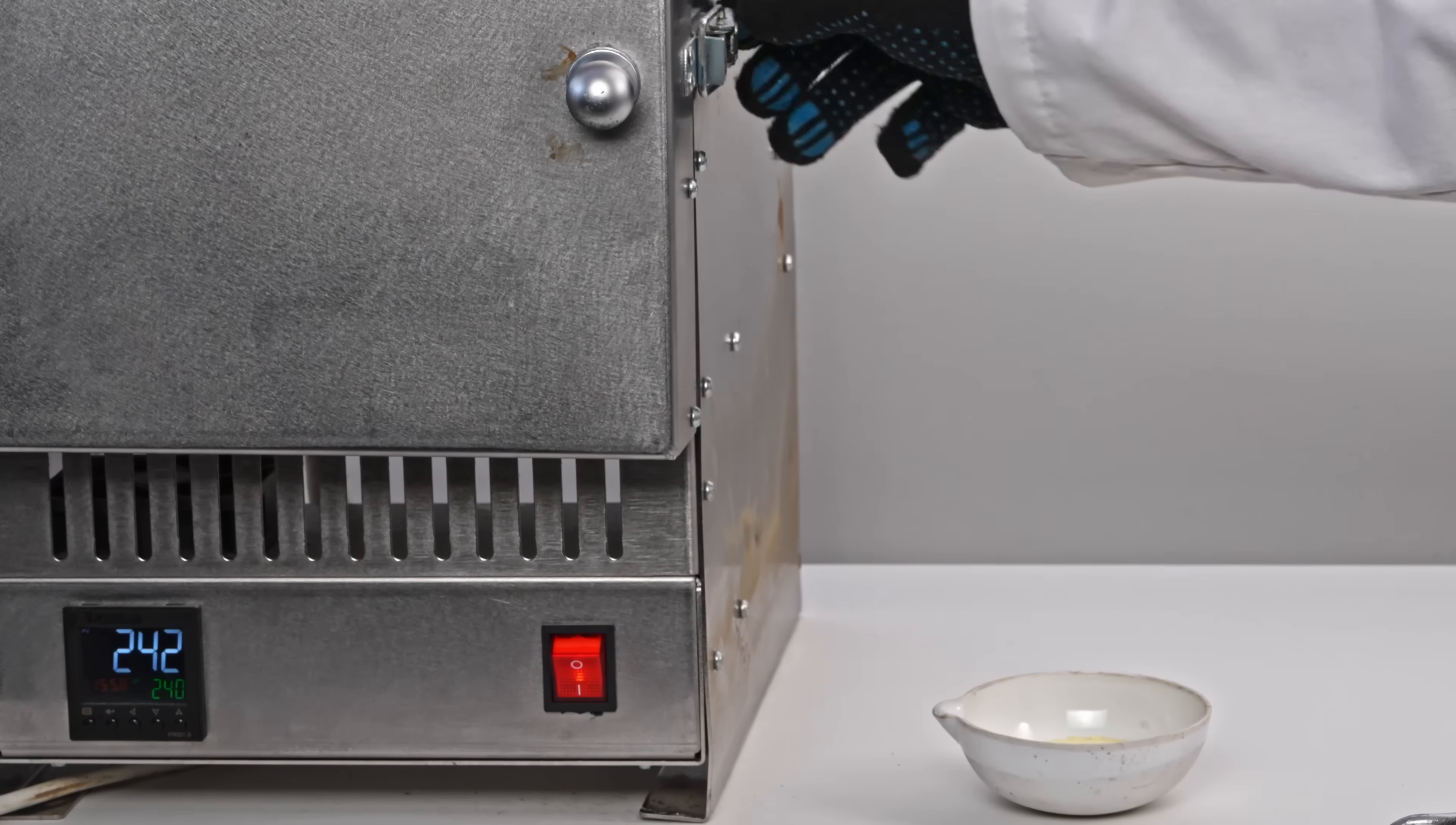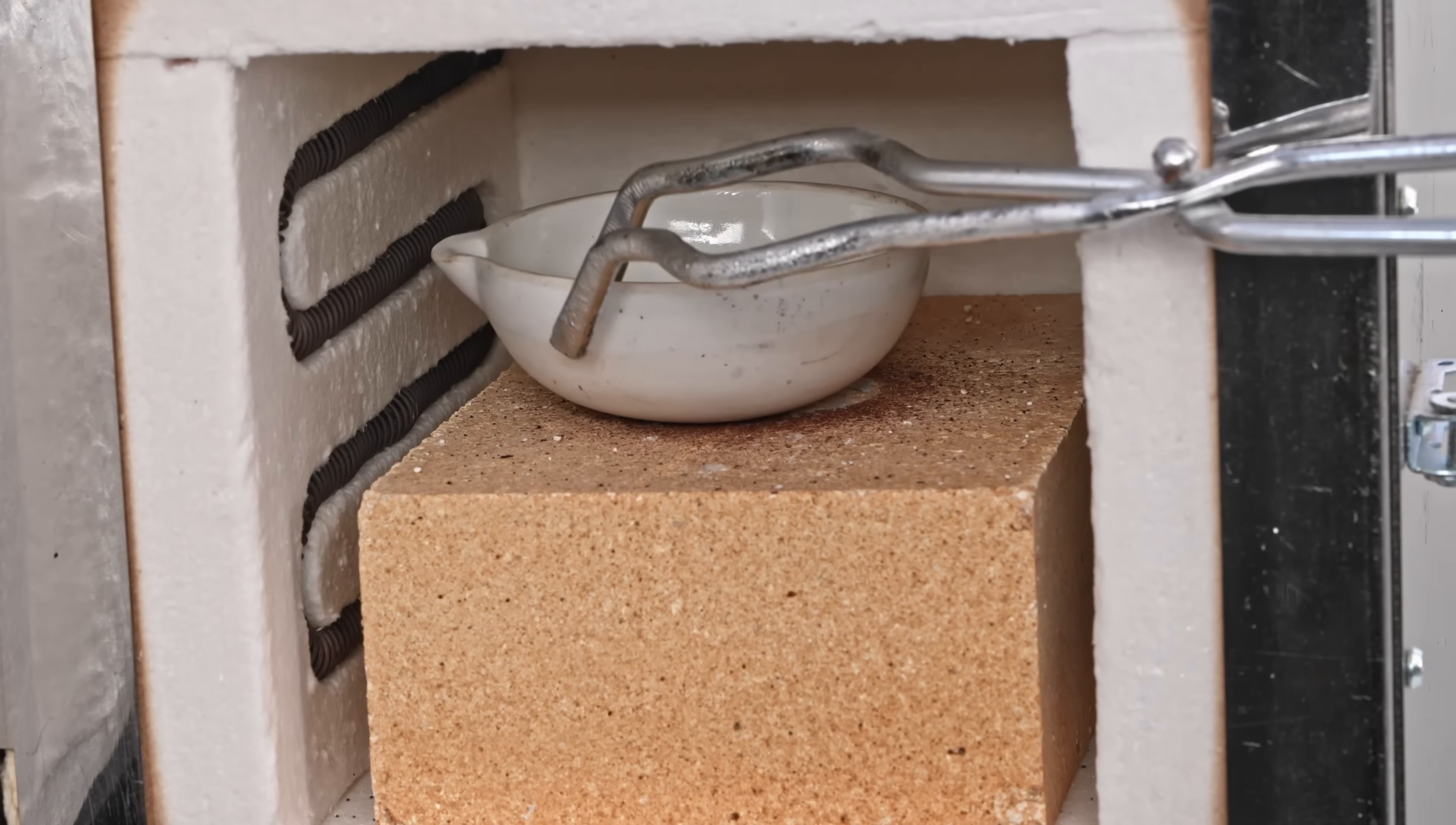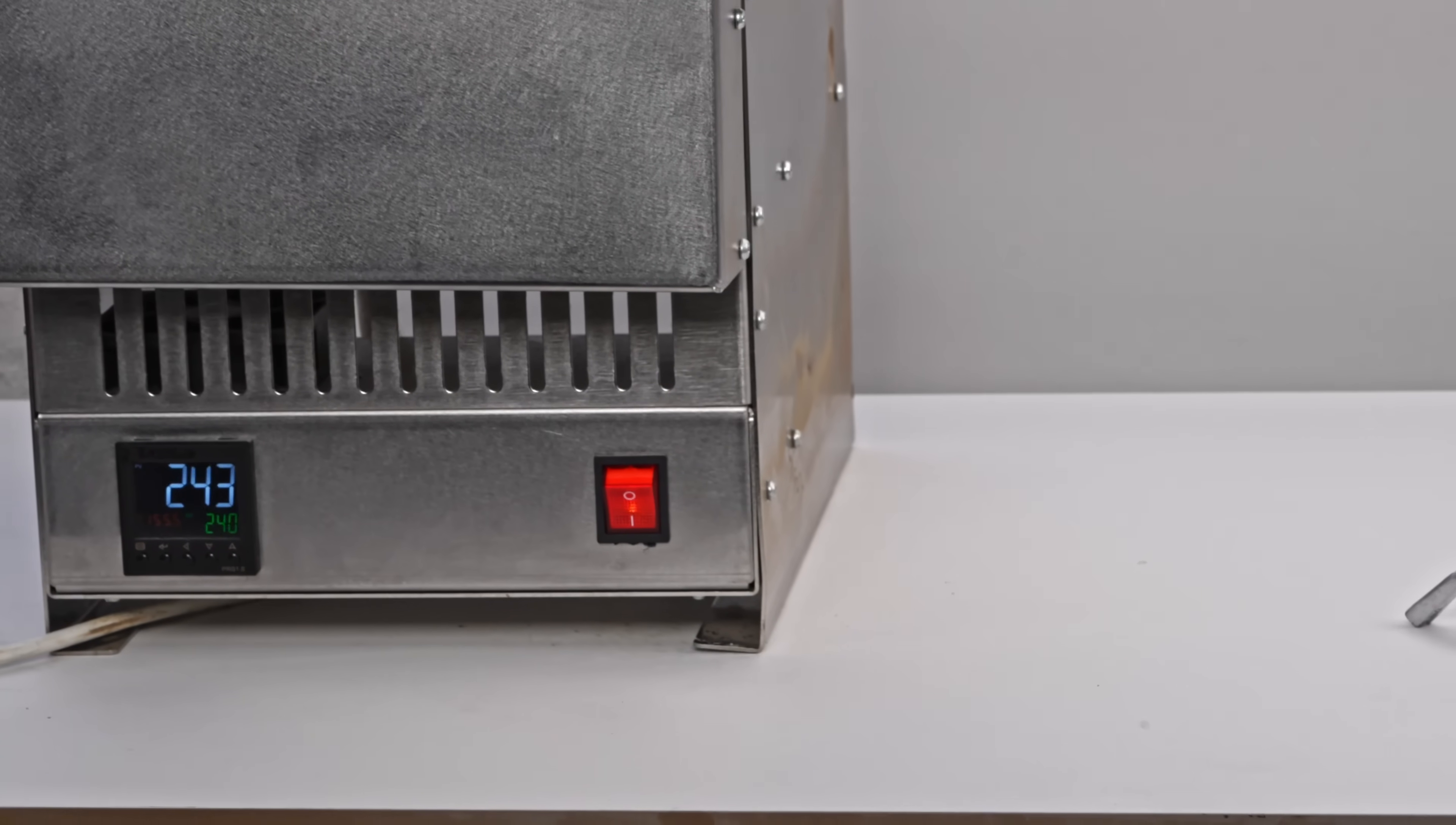To dry it, I heated hydrated salt to about 250 degrees Celsius. The heat removes the water, leaving behind anhydrous potassium ferrocyanide.